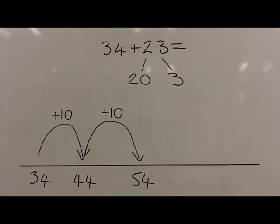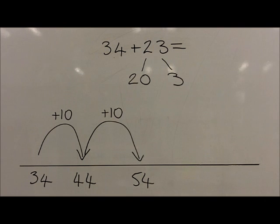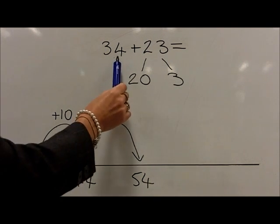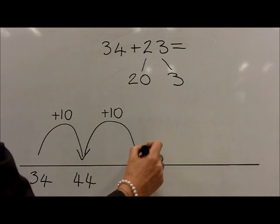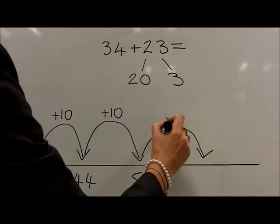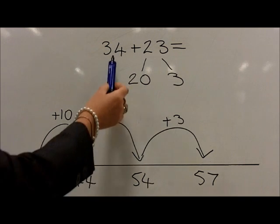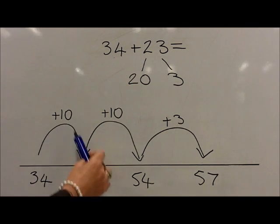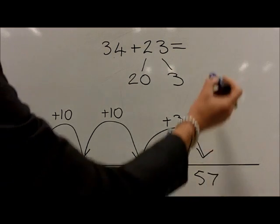Then, to help children become more efficient, they add the units in one jump. In this example, they should be able to use the known fact that 4 plus 3 equals 7. So 54 plus 3 equals 57. Therefore, 34 plus 23 equals 57.